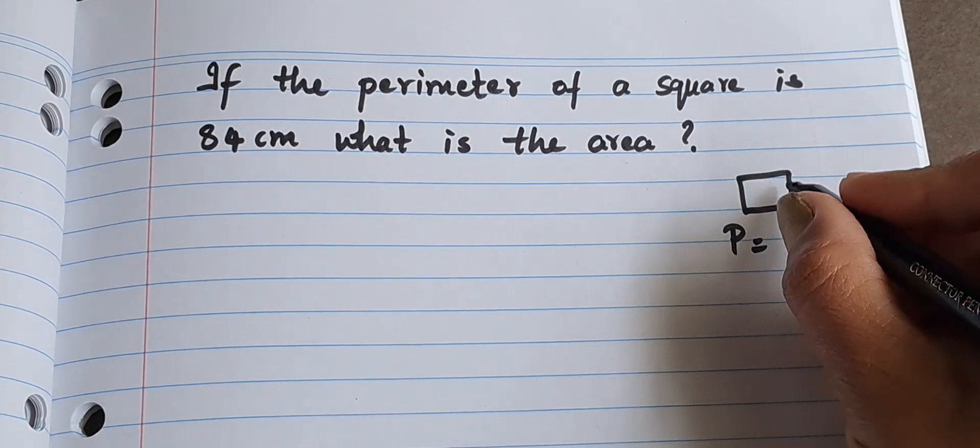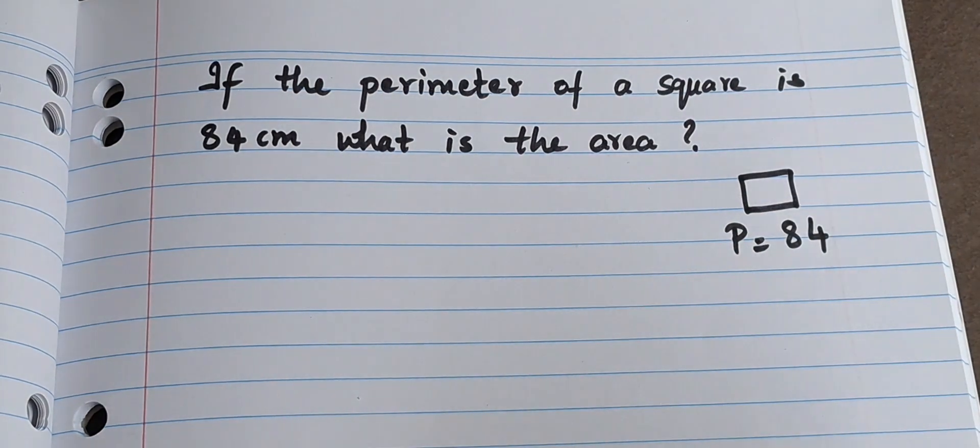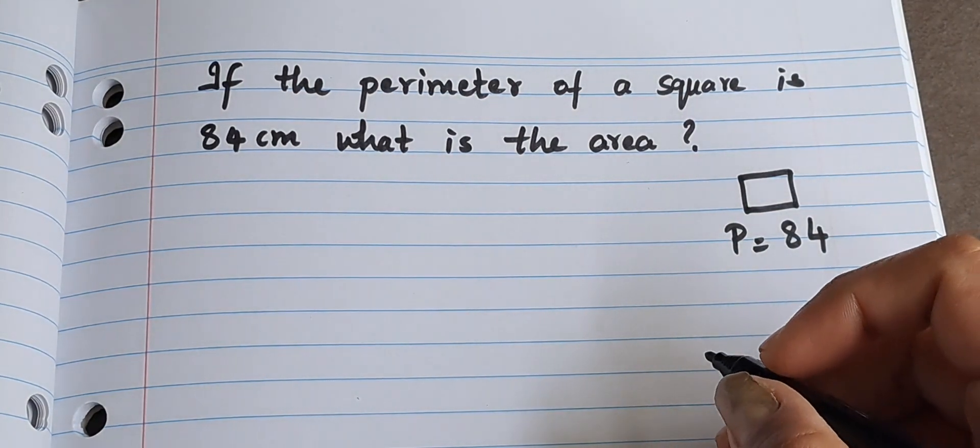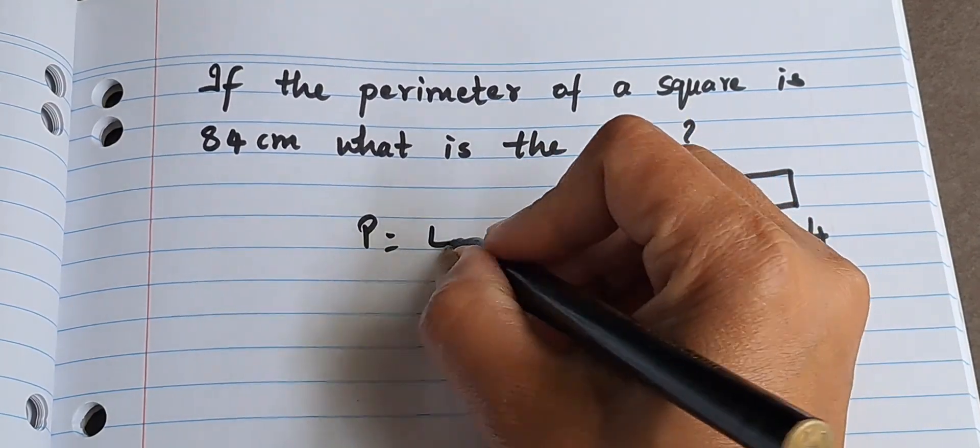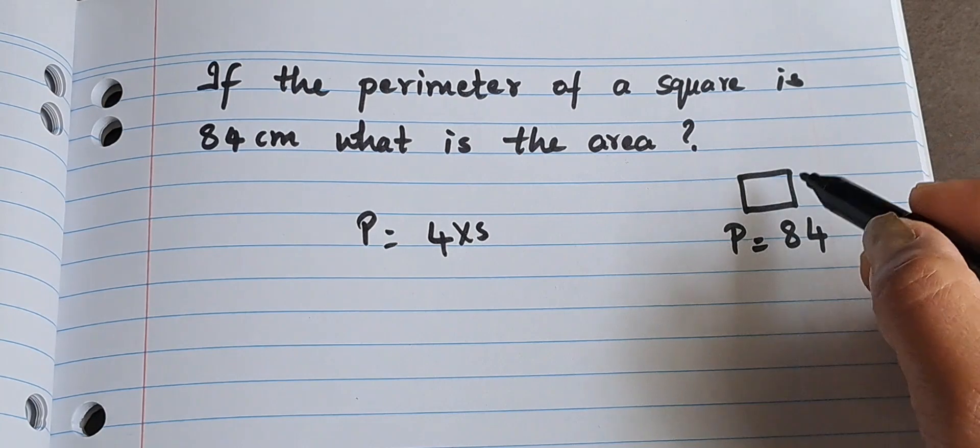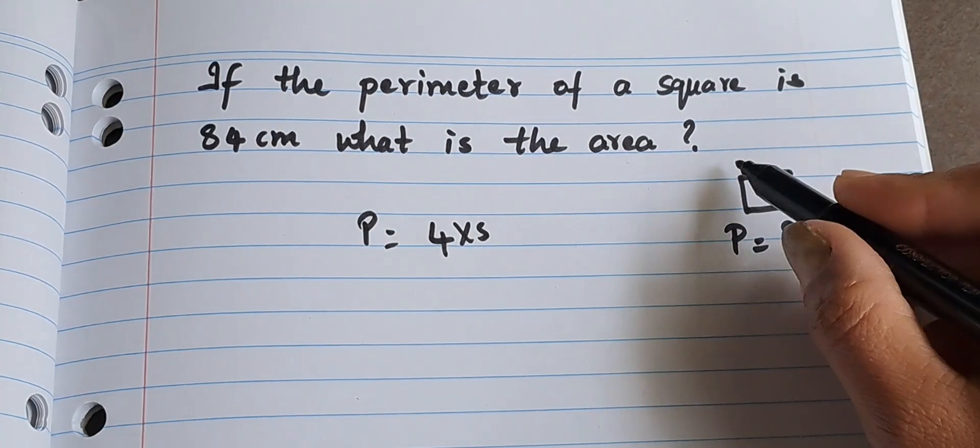We have to find the area of the square. Now we have a formula for the perimeter of a square. That is, perimeter of a square is 4 times the side. See here: side plus side plus side plus side. That is 4 times the side is the perimeter of the square.